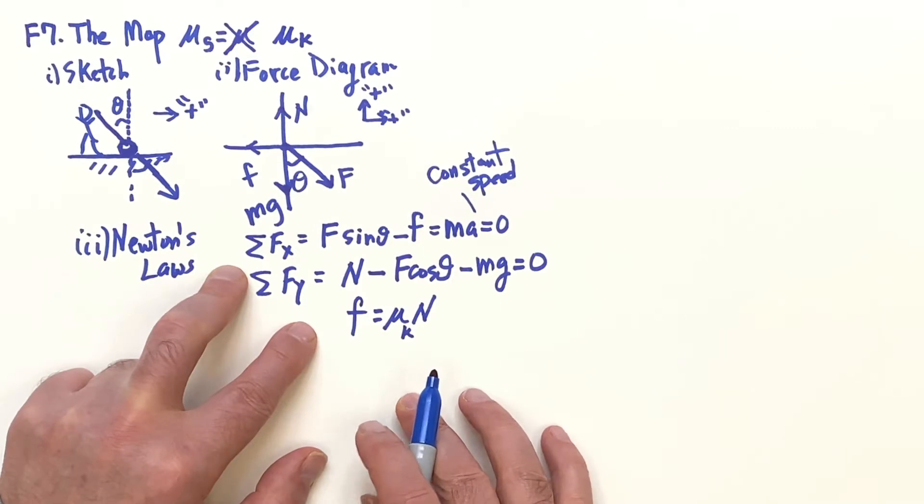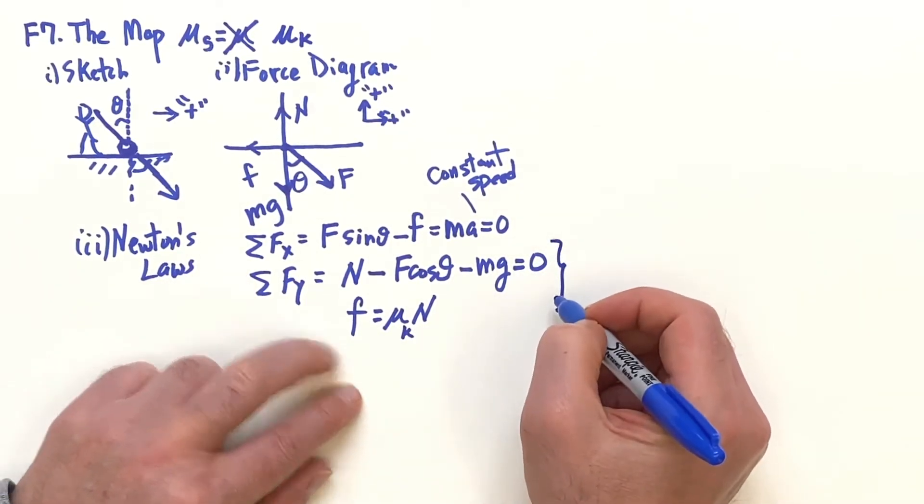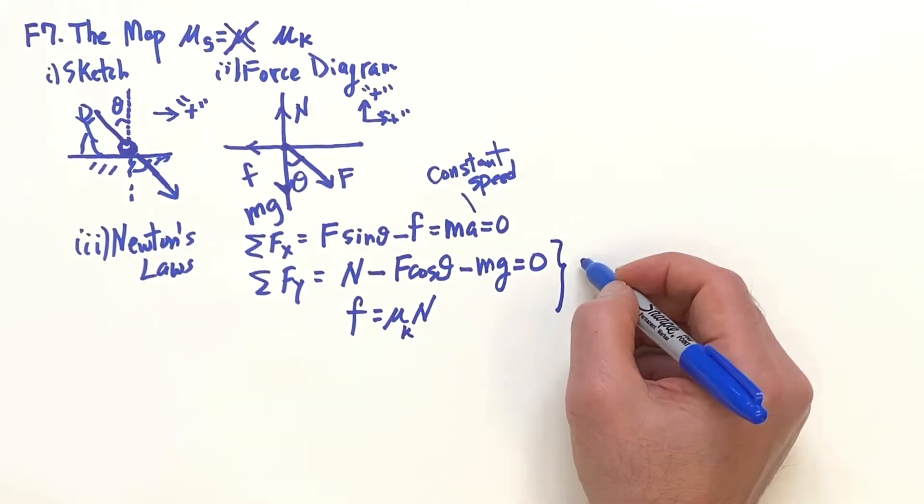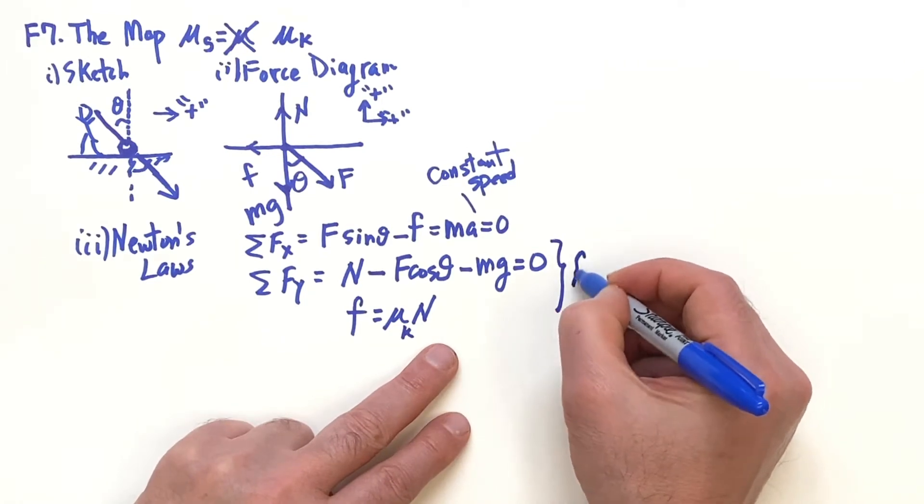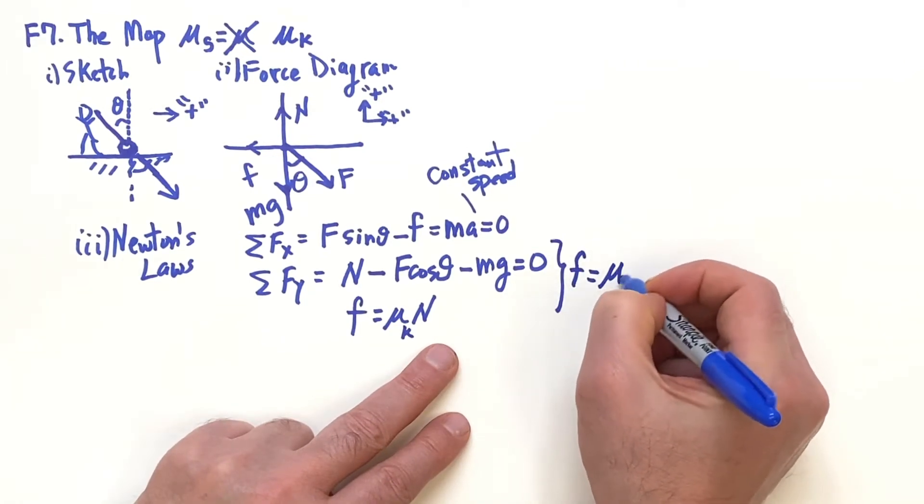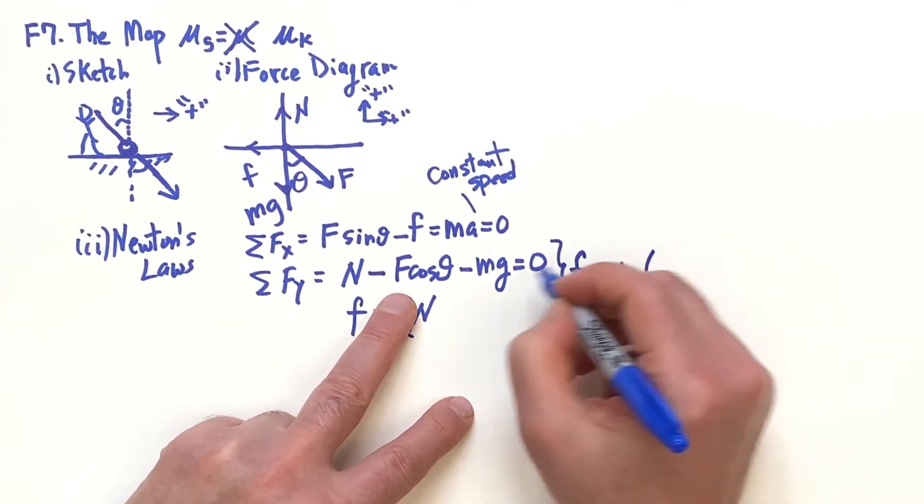So then here I use these two equations to get rid of the N. That would mean that the friction is μ_k...